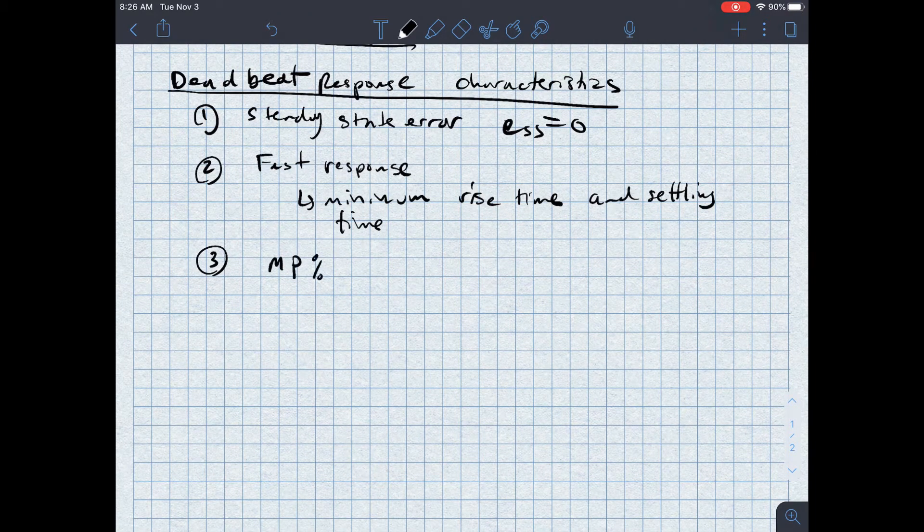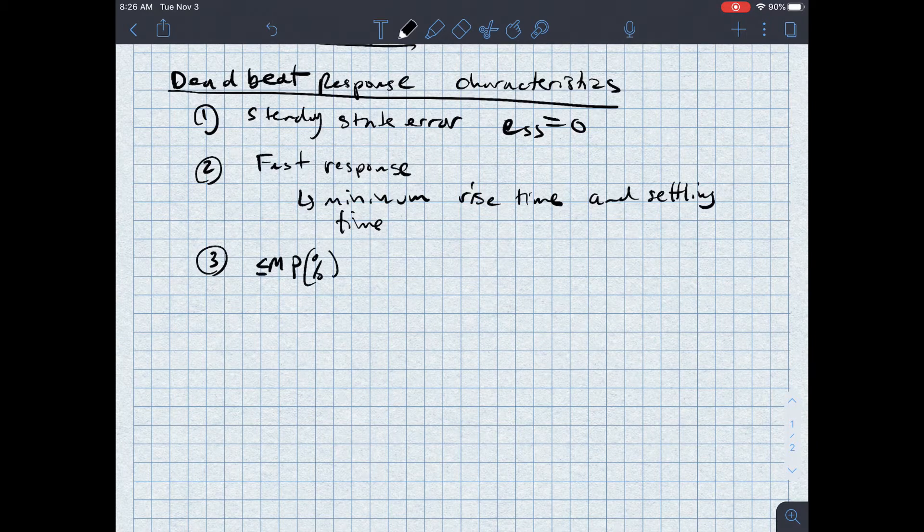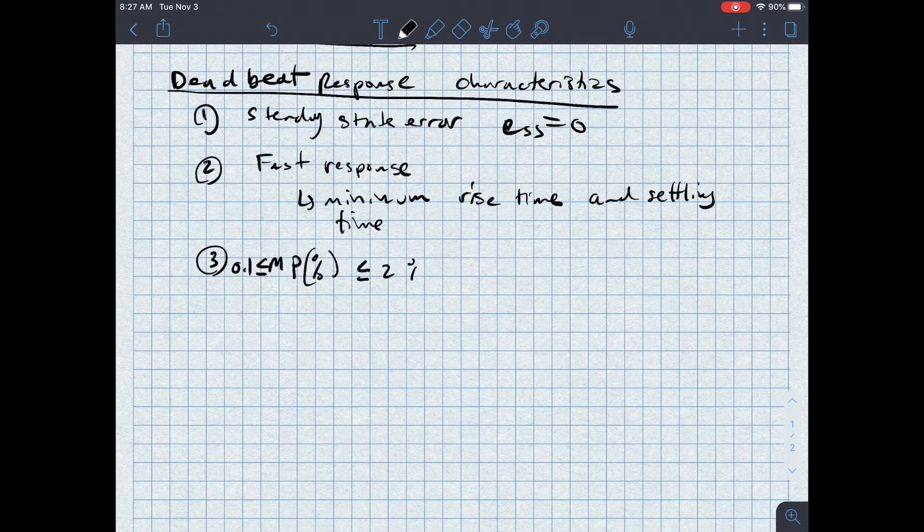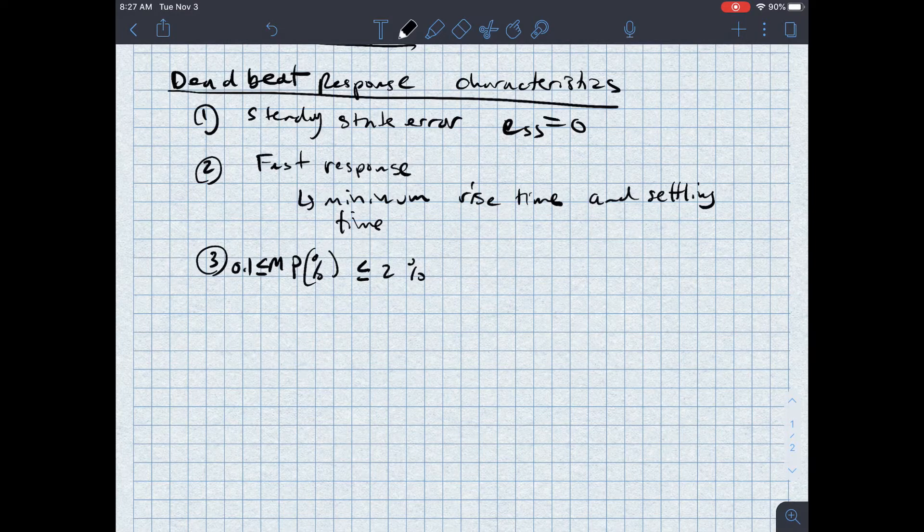Usually these are predetermined factors that we are trying to meet. Number three says that the percent overshoot is small. MP percent is between 0.1 and 2 percent. And the reason that we pick those values is that means as soon as the signal reaches the 2 percent band, it stays within it.